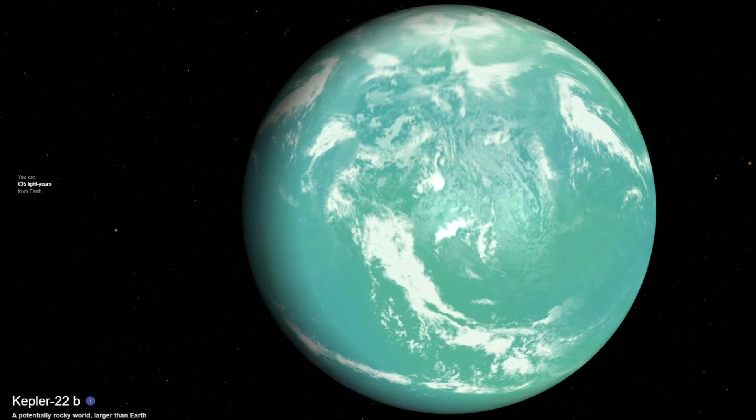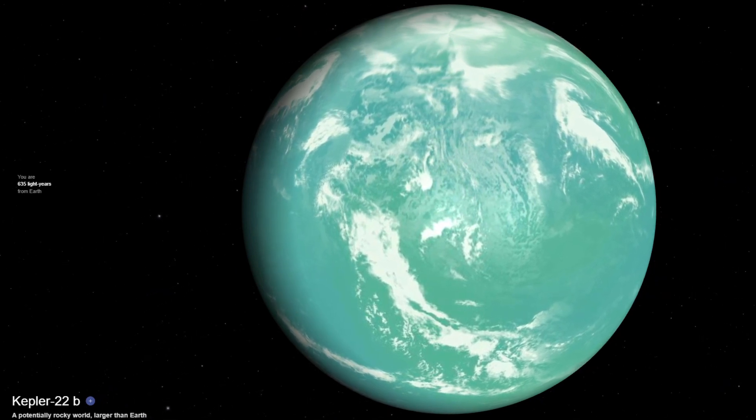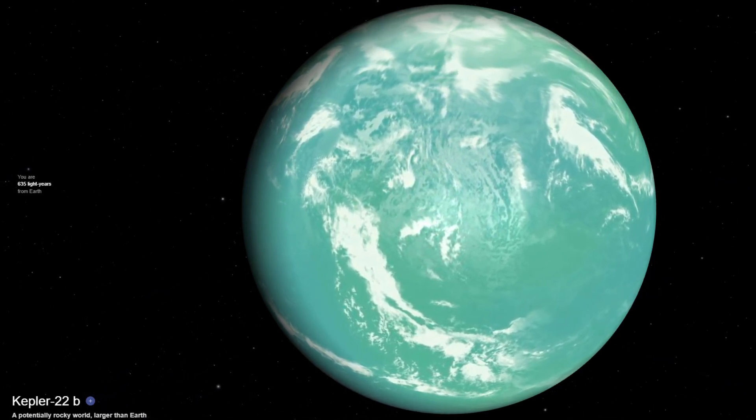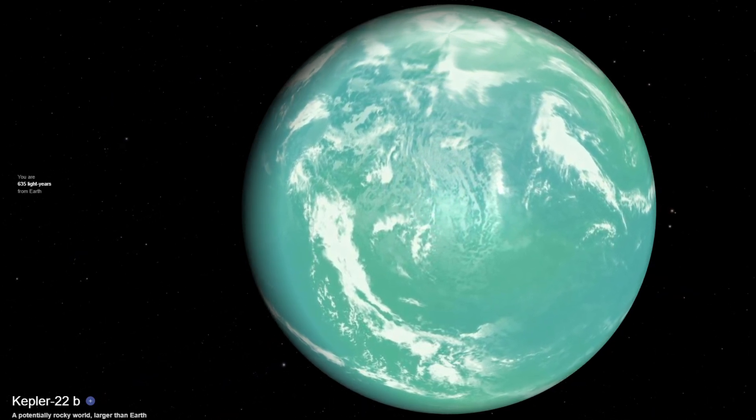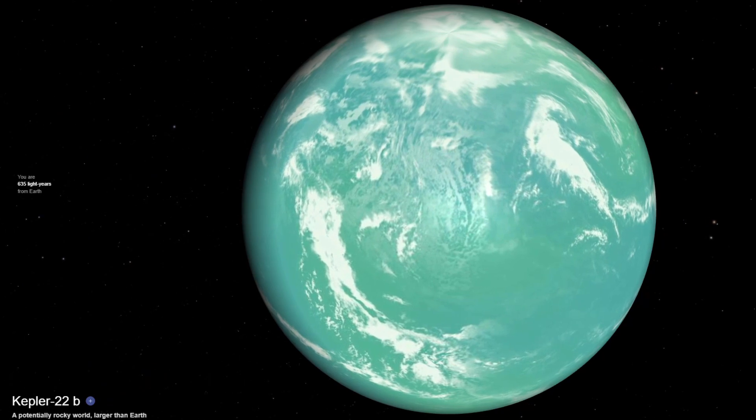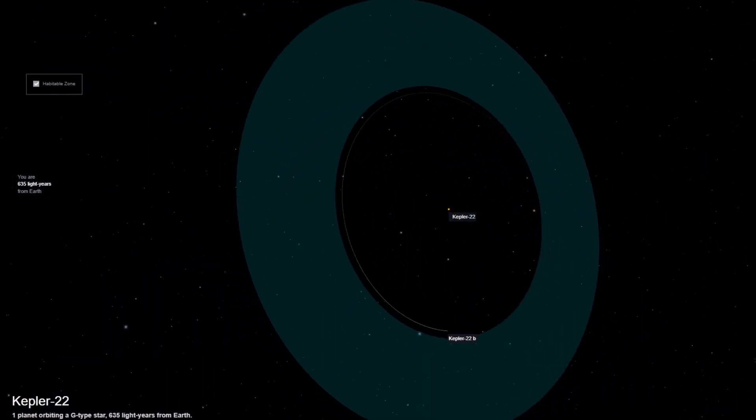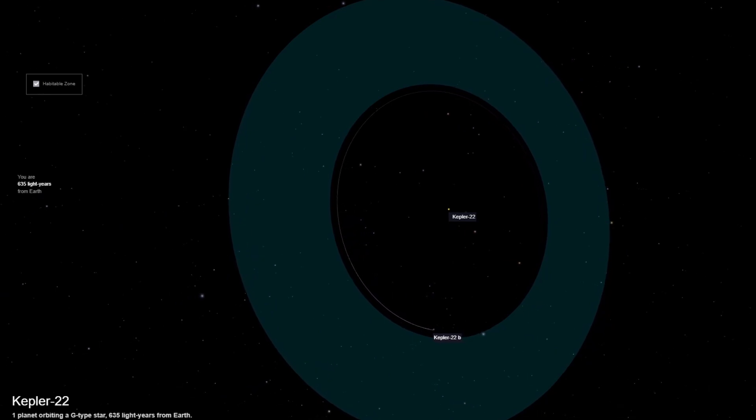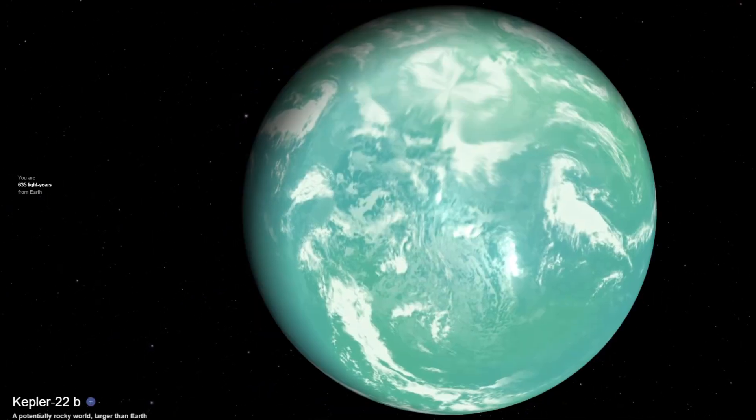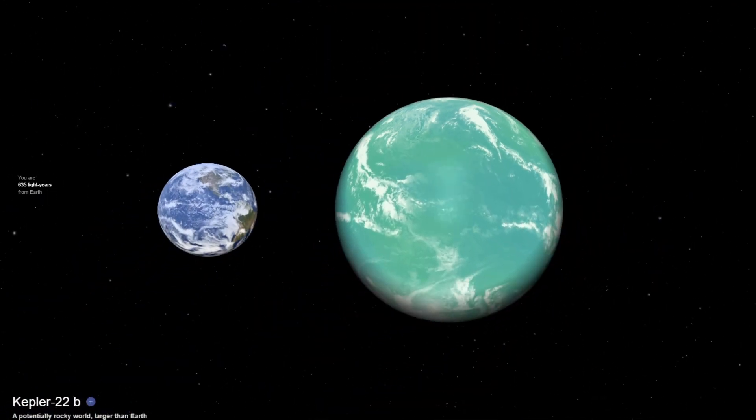Kepler-22b, also known as Kepler Object of Interest 087.01, was the first confirmed Earth-like exoplanet to be discovered in its star's habitable zone. This super-Earth orbits within the habitable zone of a slightly smaller, cooler star than our Sun, Kepler-22. Its 2.4 times Earth's radius has a mass of 36 Earths and takes 290 days to orbit its star. Based on computer simulations, it could be covered in water.